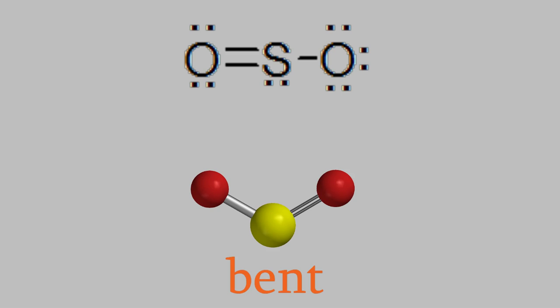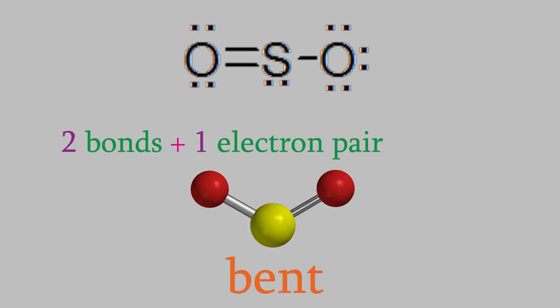The important thing to learn here is that in order to know what the shape of a molecule is, it's not enough to just know how many bonds there are. We also have to know how many unshared electron pairs are on the central atom. It's the total number of bonds plus the electron pairs that tell us what the shape will be.